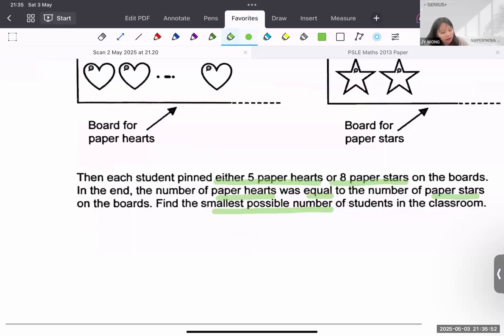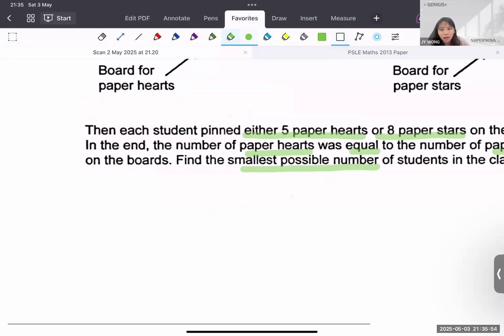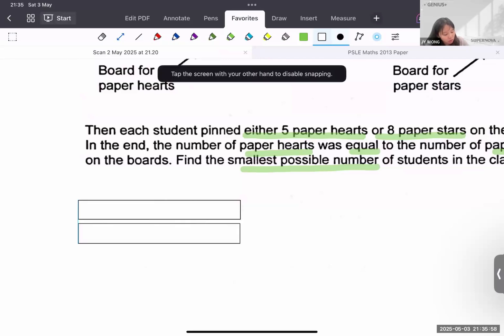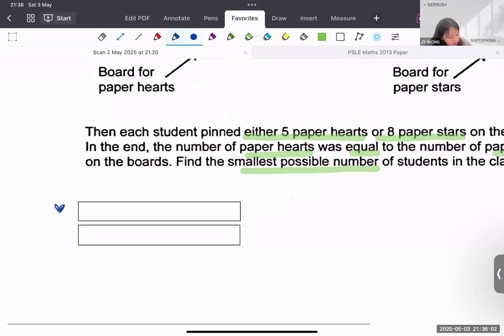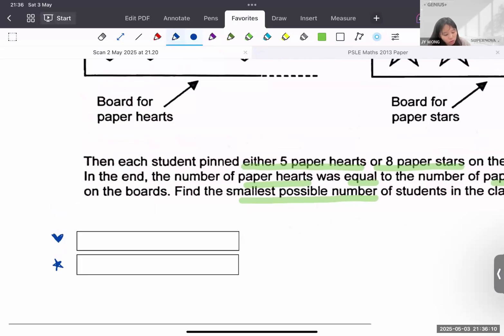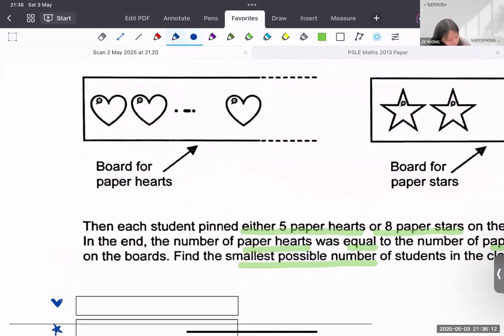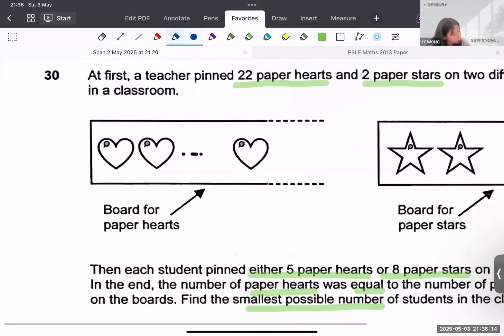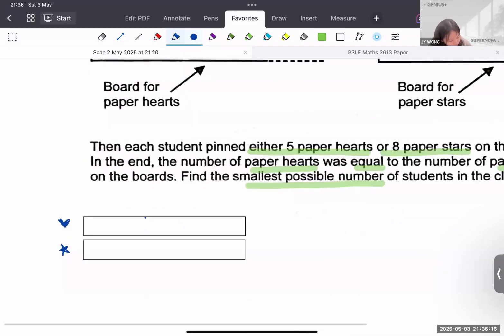So the thing here is, look, let me just go on here. So this is the heart and this is the star. I'll just draw the symbol. So at first, they already told you that the heart already had 22. So what I'm going to do here, I'm going to just show that it already has 22.